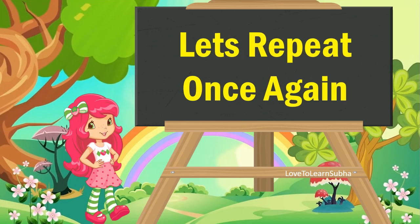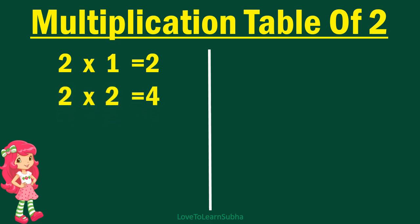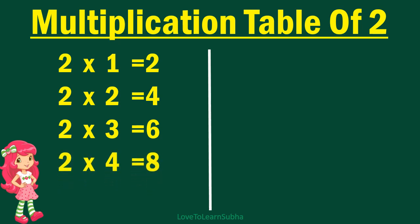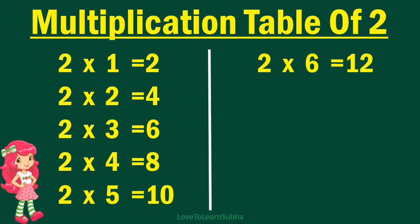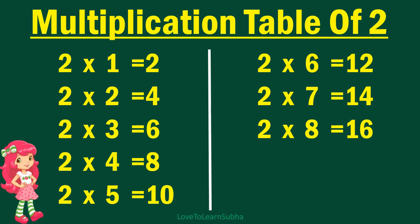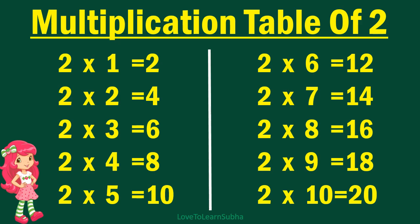Now, let's repeat it once again. 2 1s are 2, 2 2s are 4, 2 3s are 6, 2 4s are 8, 2 5s are 10, 2 6s are 12, 2 7s are 14, 2 8s are 16, 2 9s are 18, 2 10s are 20.